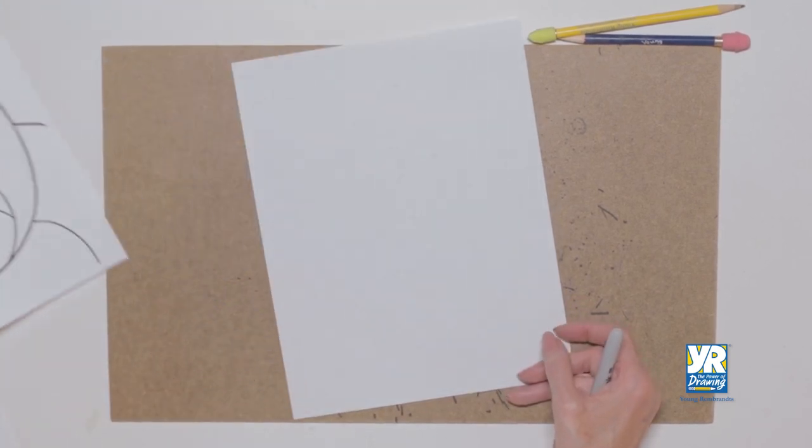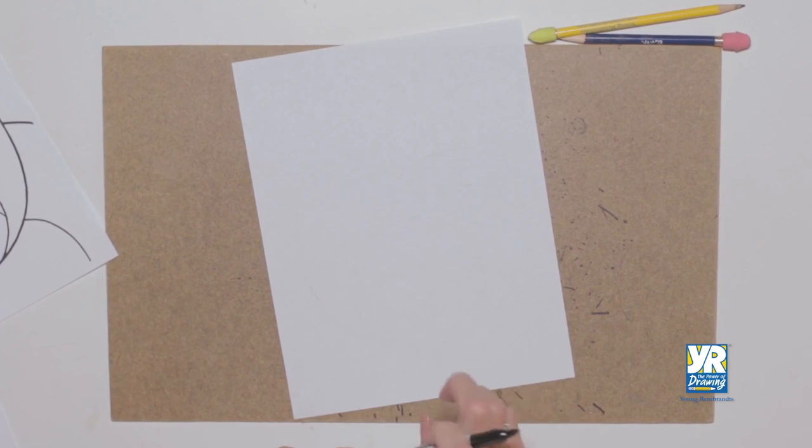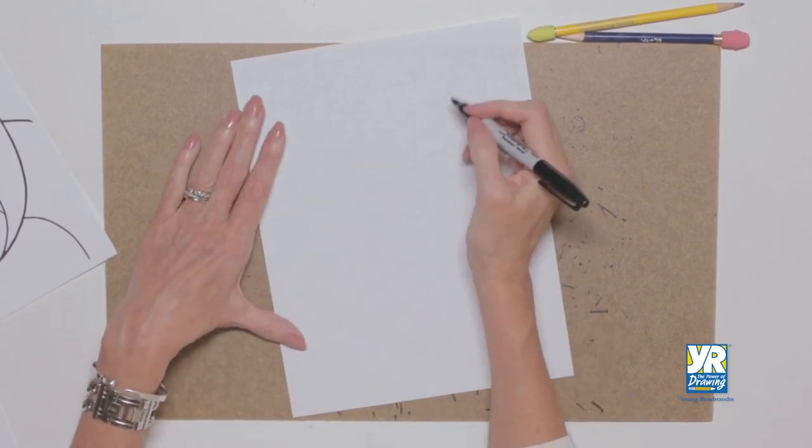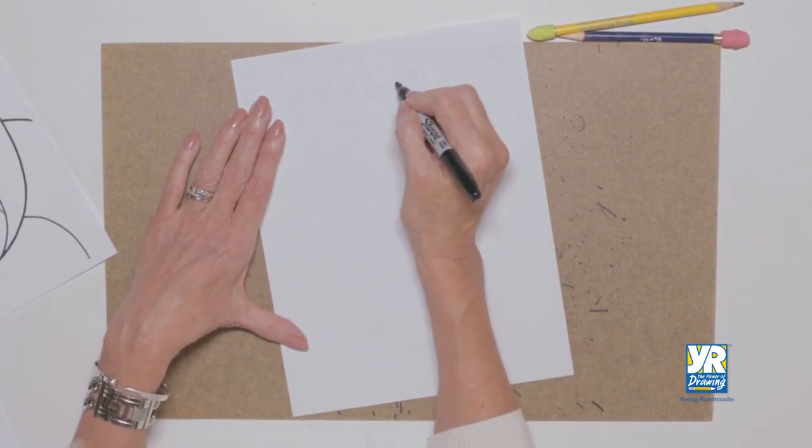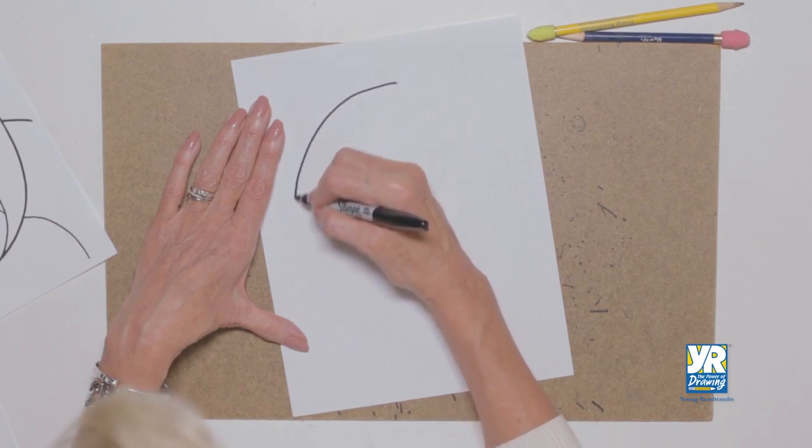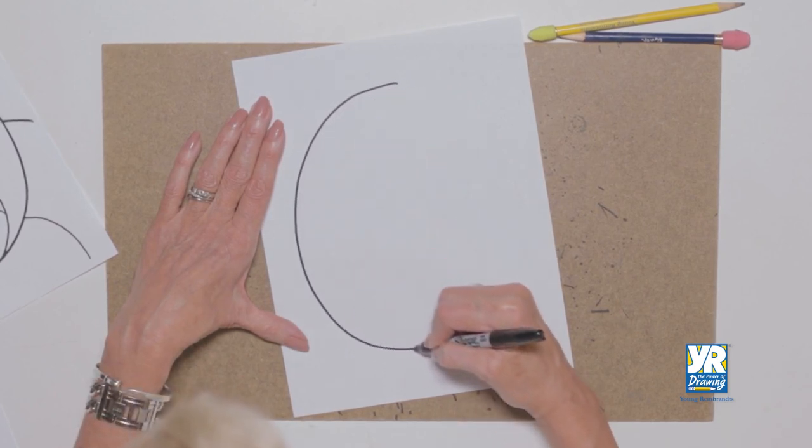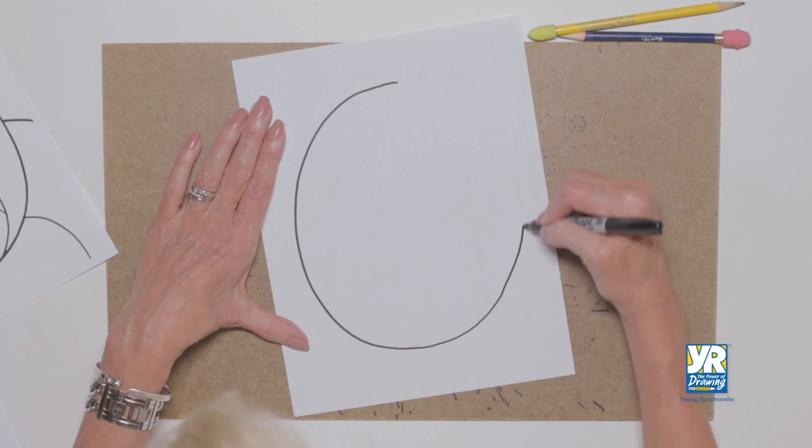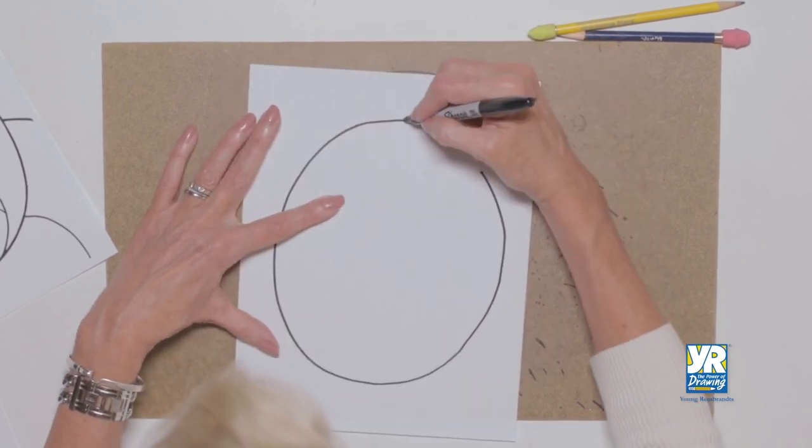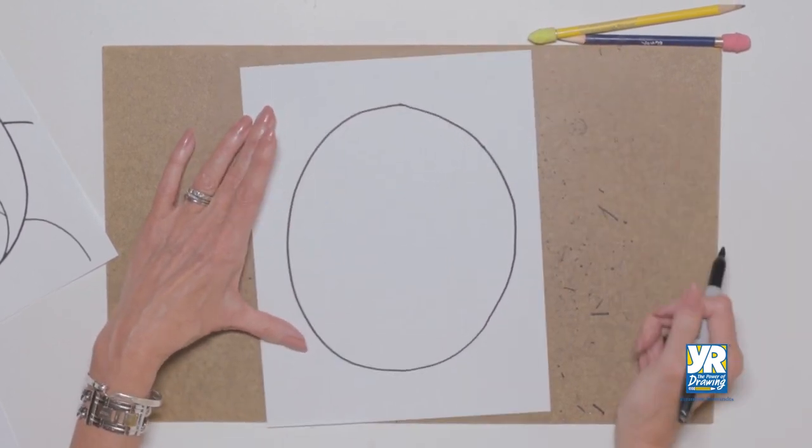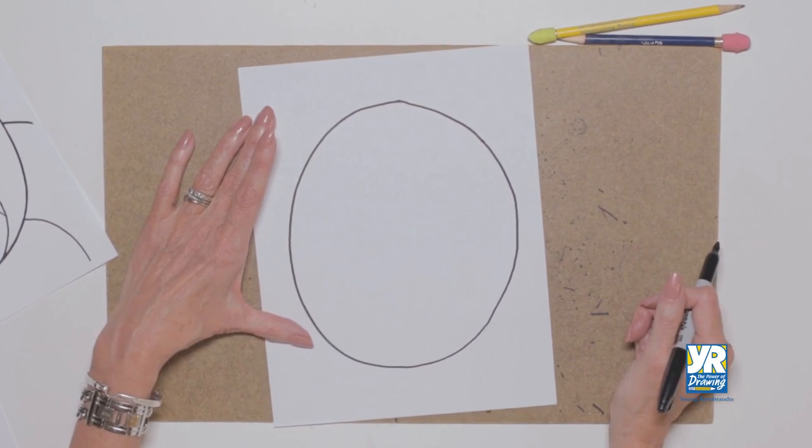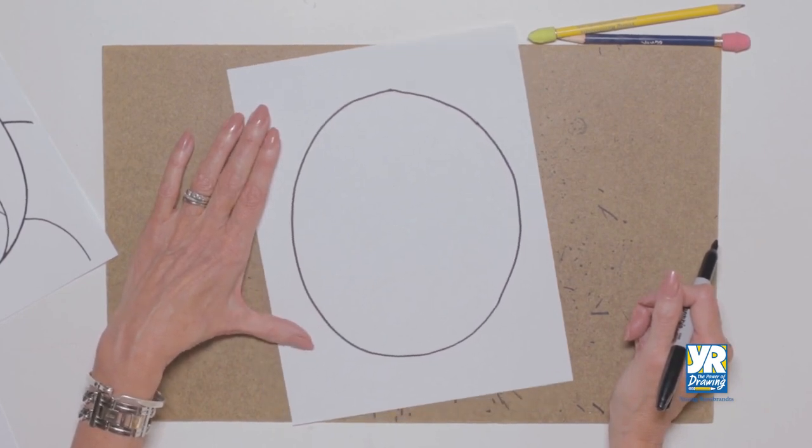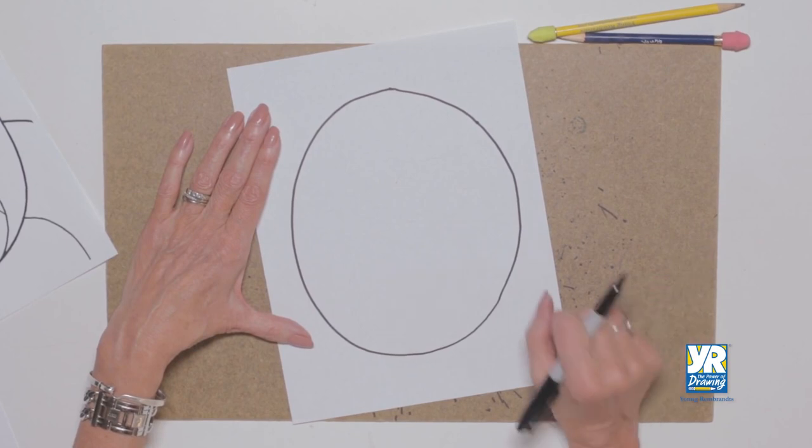So we need a very big head to start our gorilla. I'm going to do this in marker, let's see how well I do to start out, but you should use pencil so you can have a couple of tries with this. Come on, come on, come on, nice and round. Is it going to work? Look at that, a nice round gorilla head.